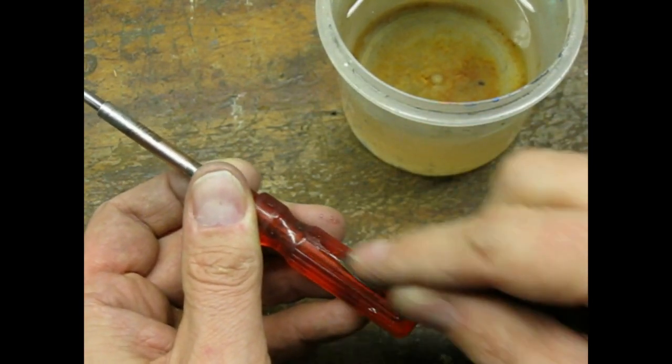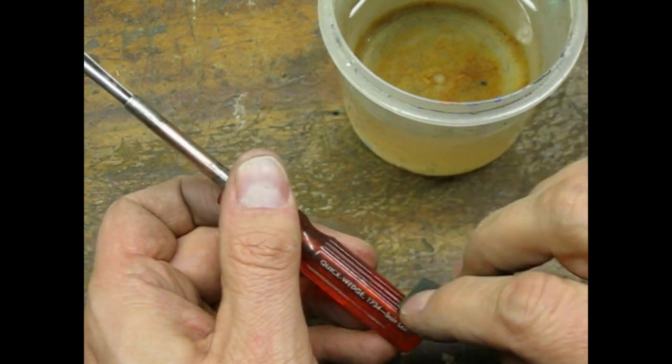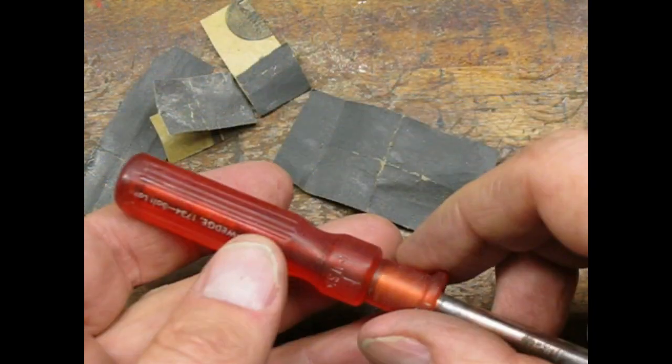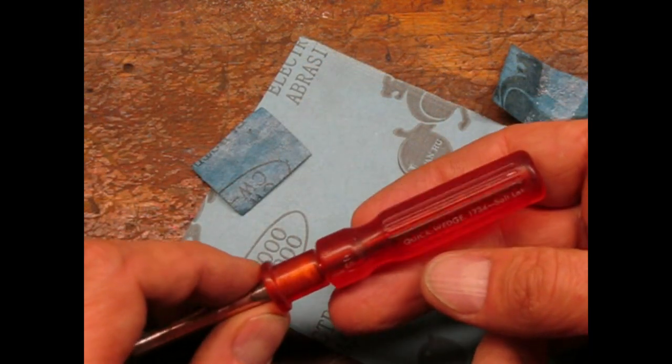I used wet and dry paper with water to sand the plastic handles. I think I started with 800, then 1000 grit. The red handle was in pretty good shape.